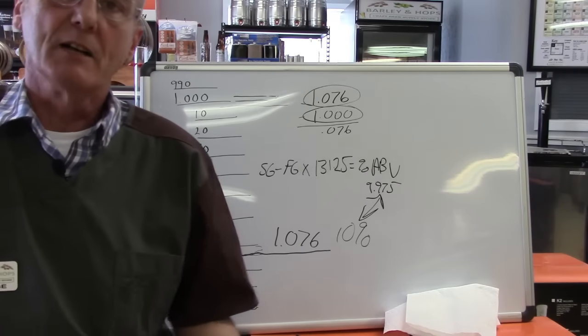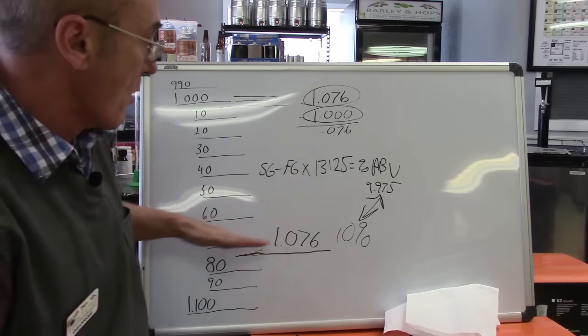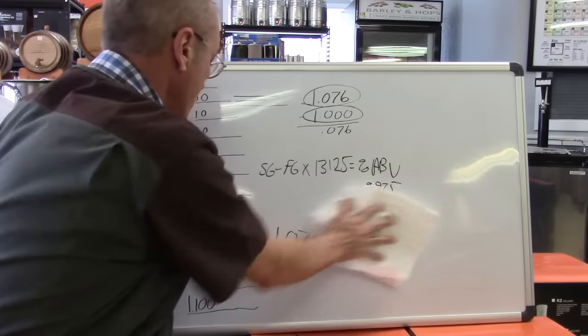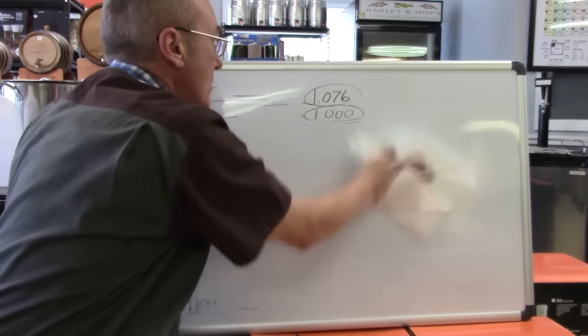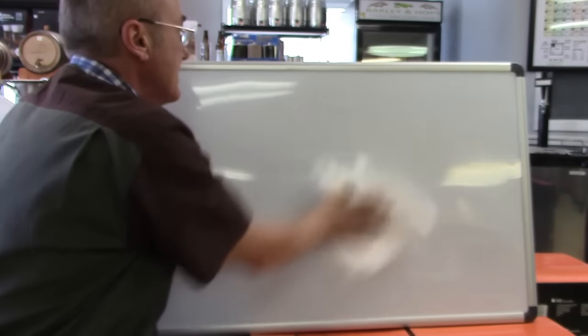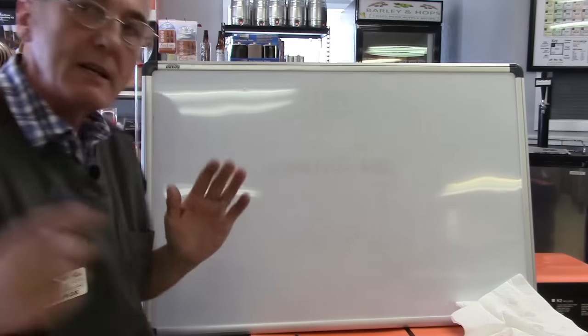Now what does that tell us? We're going to use that term 10%, or that figure 10%, and say that's where we were, 1.076 down to one. We're going to use that in our next example. And I'm going to tell you what that means, or show you what that means.